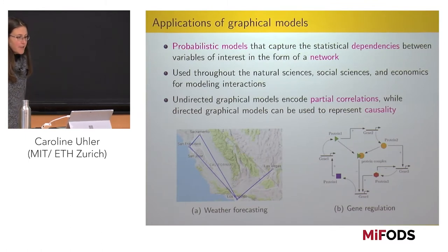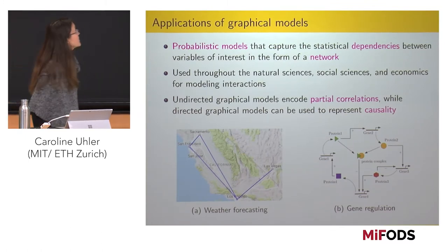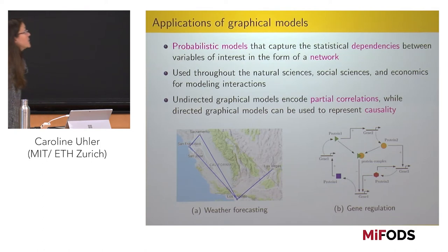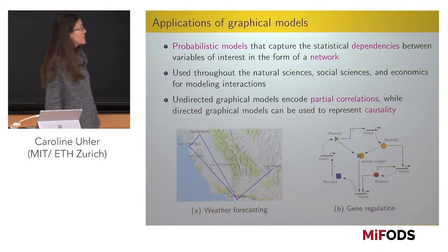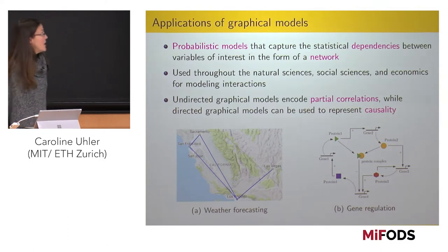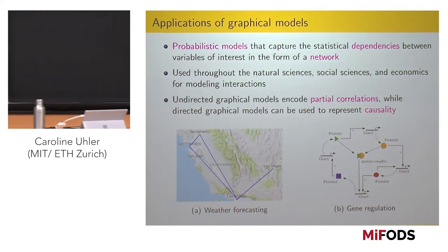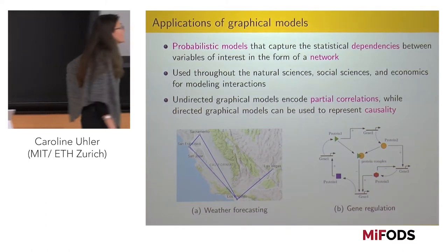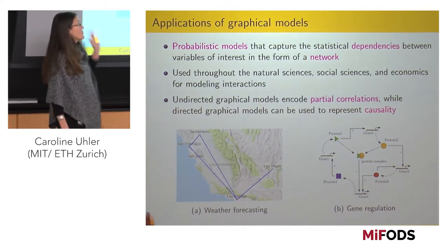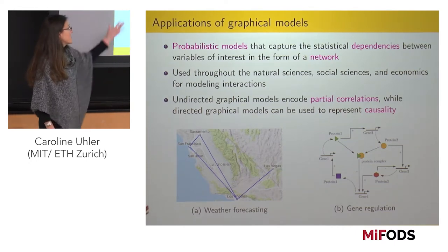So graphical models — why do we love them? They capture statistical dependencies between variables of interest in a network, which often enhances interpretability and often also allows you to compute things faster than you could otherwise without these constraints. Depending on the application you're looking at, you might want to use very different graphical models.